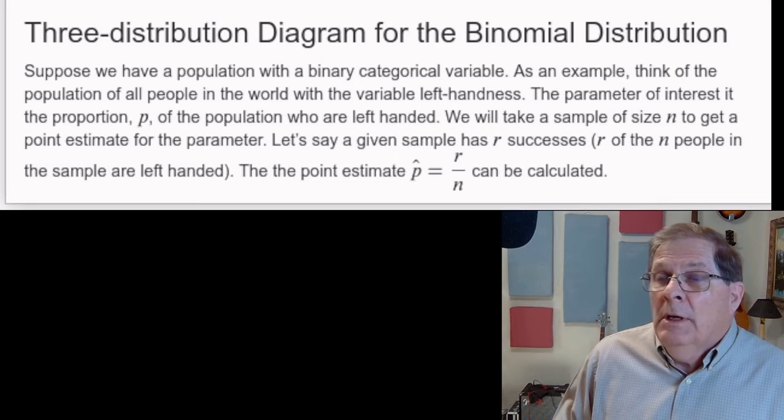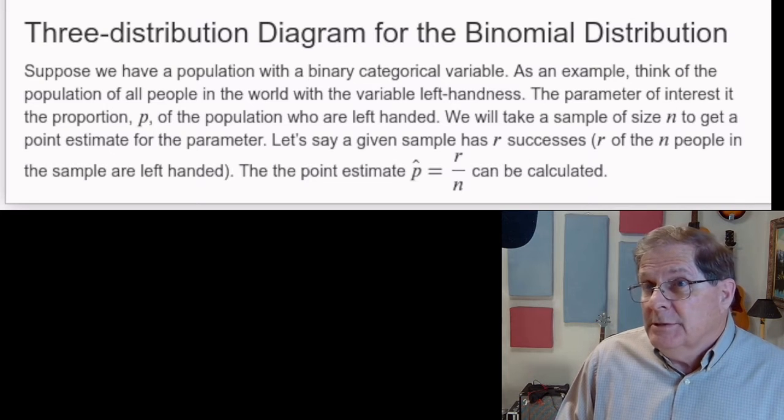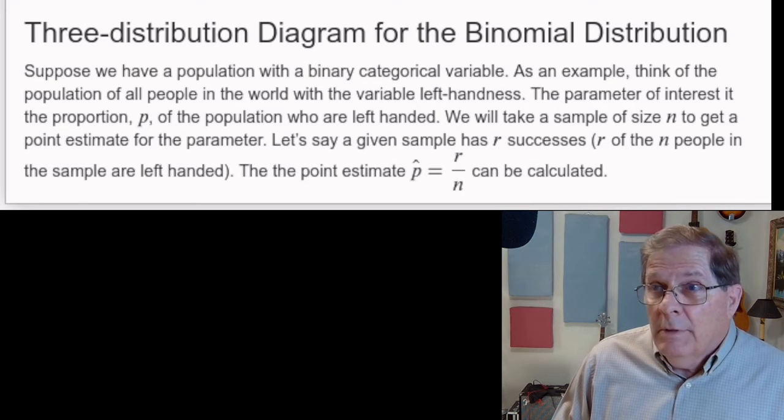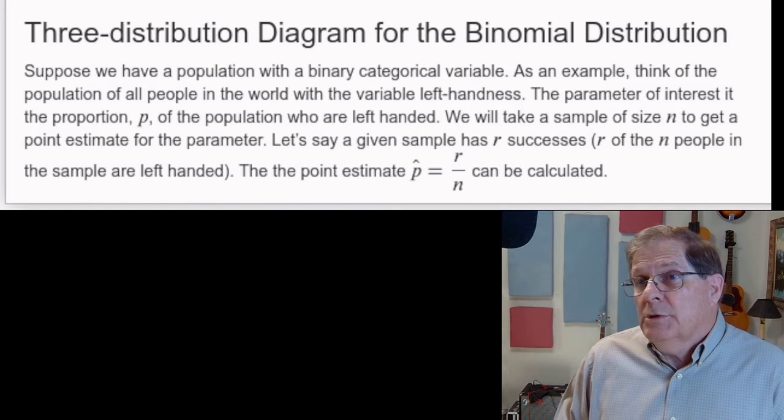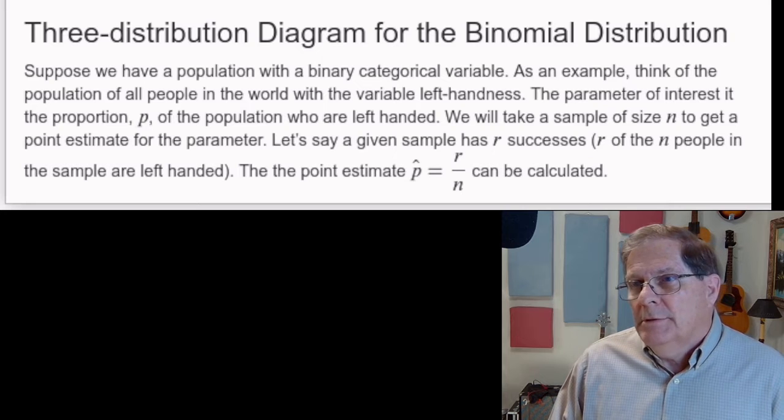That point estimate is found by counting the number of successes—the number of the n people who are left-handed—and dividing that by n. So that gives us the proportion of the sample.